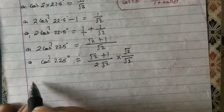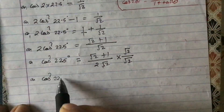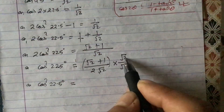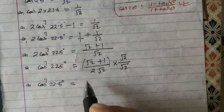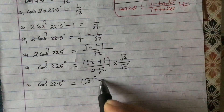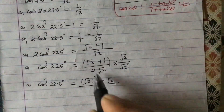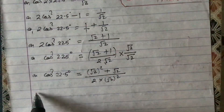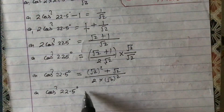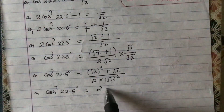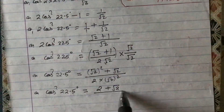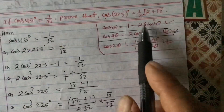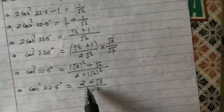After rationalizing: cos²(22.5°) = (√2 × (√2 + 1)) / (2√2 × √2) = (√2·√2 + √2·1) / (2 × (√2)²) = (2 + √2) / (2 × 2) = (2 + √2) / 4. Looking at the proving part, we need 2 + √2 in the numerator — and indeed we have 2 + √2 here.